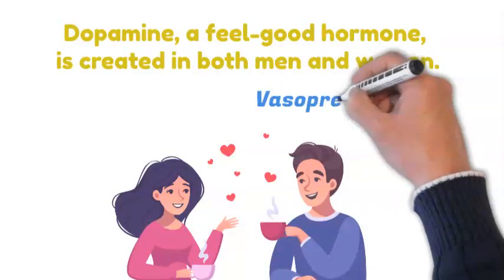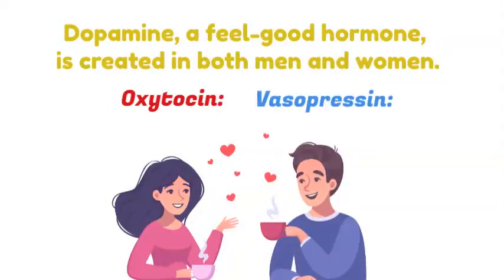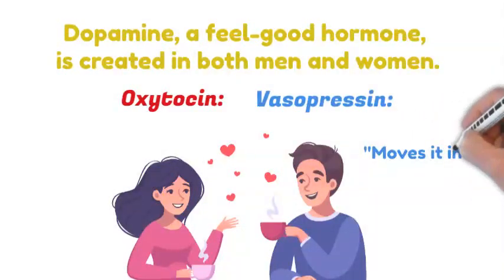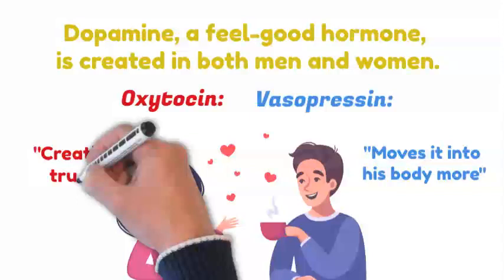Men's vasopressin and women's oxytocin are two more hormones that influence attraction. Vasopressin sort of moves it into his body more, whereas oxytocin has to do with women creating trust.